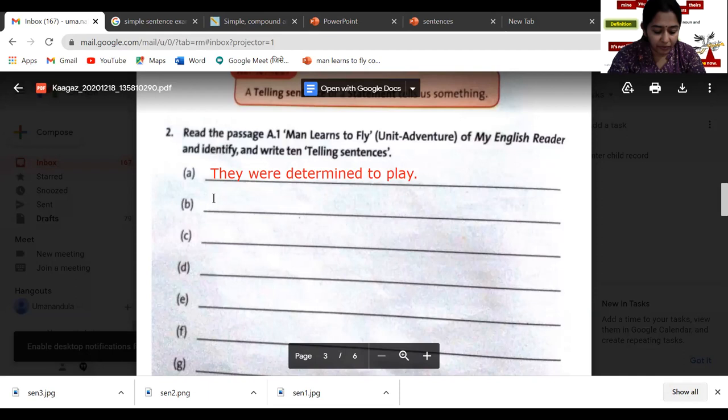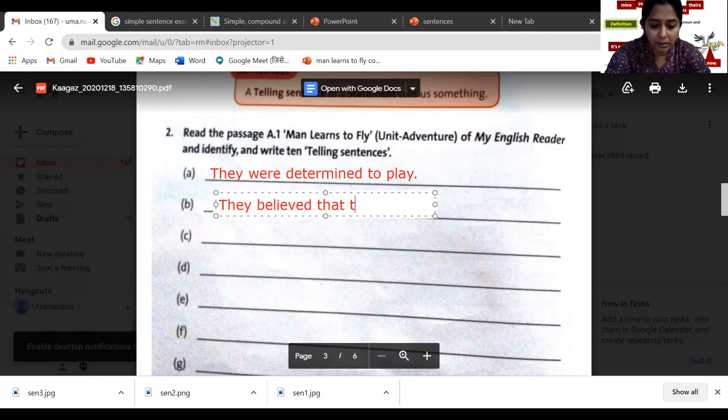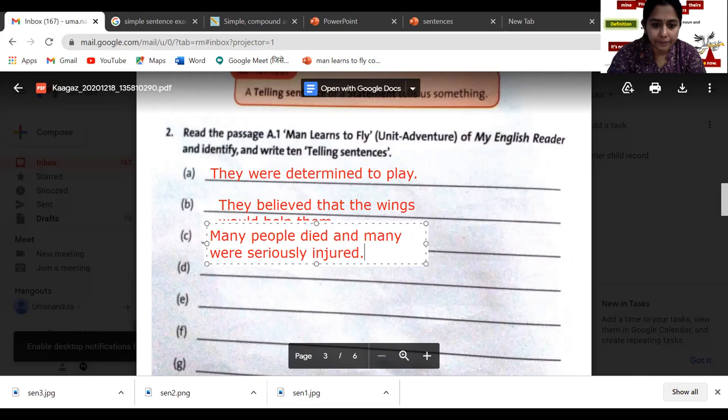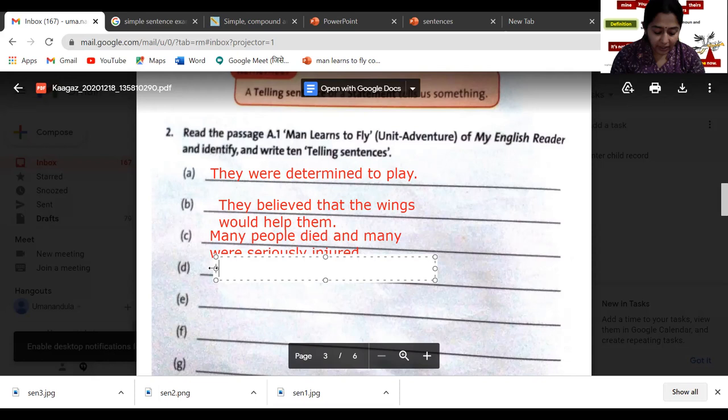Now read the passage 'Man Learns to Fly' from My English Reader and identify and write 10 telling sentences. In the reader you have done some sentences. Any statement is nothing but a sentence, or a telling sentence, or a statement. So I will write here: 'They were determined to fly.' Any sentence from the lesson Man Learns to Fly. And one more sentence from the same text: 'They believed that the wings would help them.' Then: 'Many people died and many were seriously injured.' Then: 'They filled it with hot air and released it.'